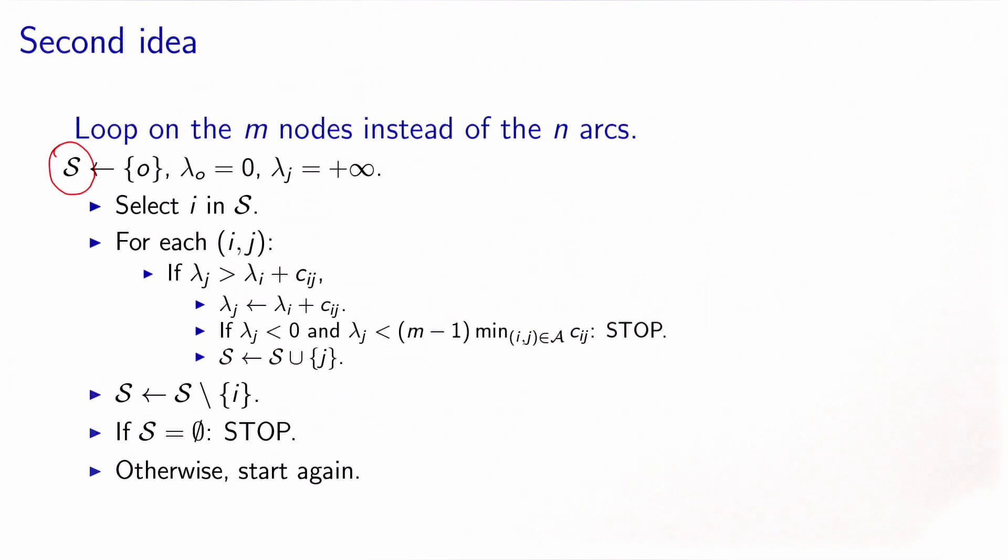The algorithm goes as follows. We initialize this set S to the origin node. So in the beginning, the set of nodes contains only one node, the node o. And we initialize the labels. We put zero for lambda o. Remember, we will interpret the labels as the distance of a path from o to a node.